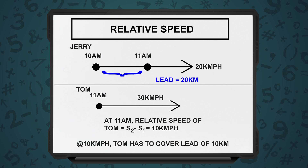So what will happen to the relative speed? When two objects are moving in the same direction, relative speed will be the speed of the faster object minus the speed of the slower object. So here, speed of Tom minus speed of Jerry: 30 km/h minus 20 km/h equals 10 km/h. Which means with each passing hour, Tom gains a distance of 10 km over Jerry. So relative speed is 10 km per hour.